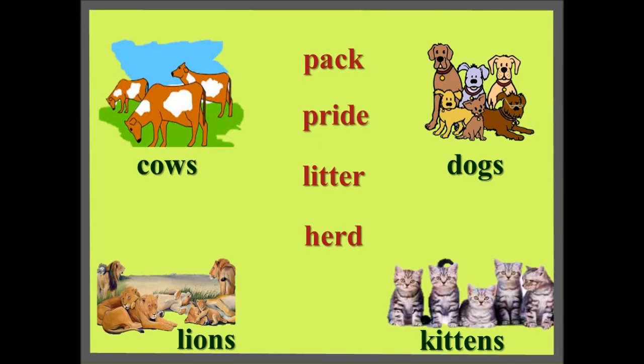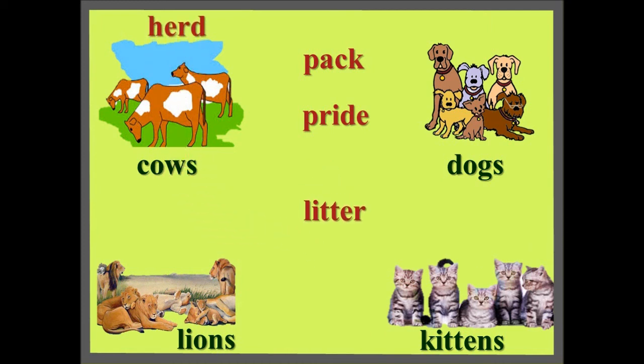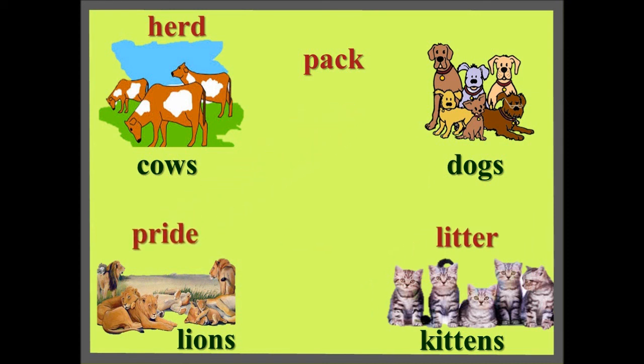Now children, match the pictures with the correct collective noun. We have a group of cows, dogs, lions, and kittens. Do you remember what their collective nouns are? A herd of cows, a litter of kittens, a pride of lions, and a pack of dogs. Excellent work children!